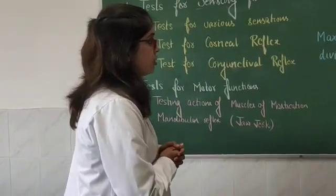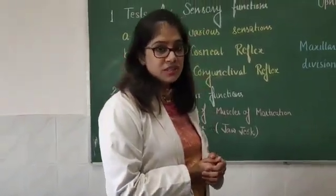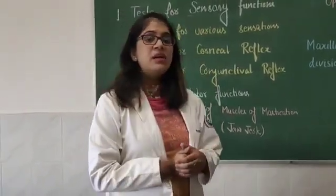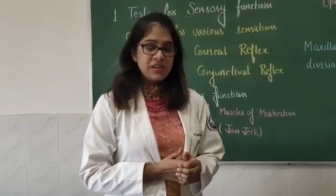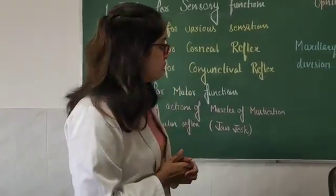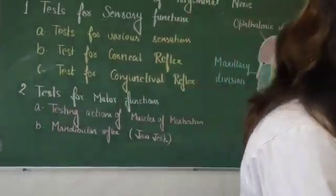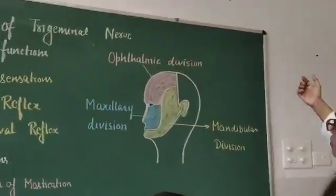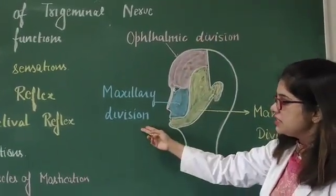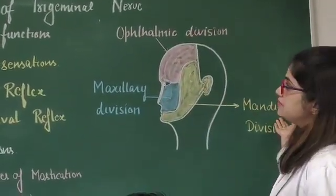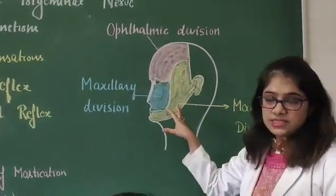Before doing the sensory examination, we must know the divisions of the trigeminal nerve and which parts of the face each division supplies. There are three divisions supplying the face: the ophthalmic division, the maxillary division, and the mandibular division. All three divisions have sensory supply from the face.